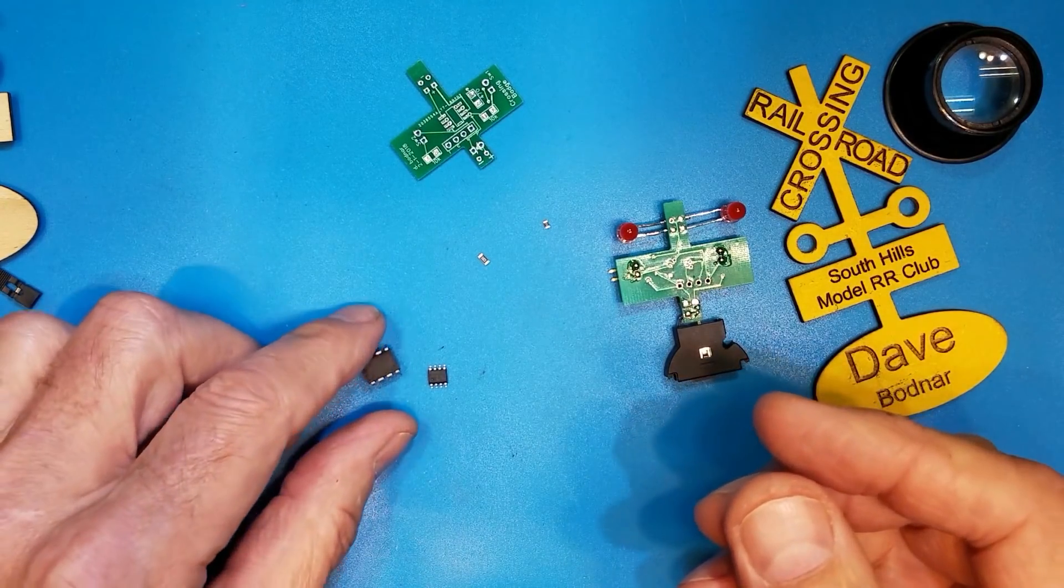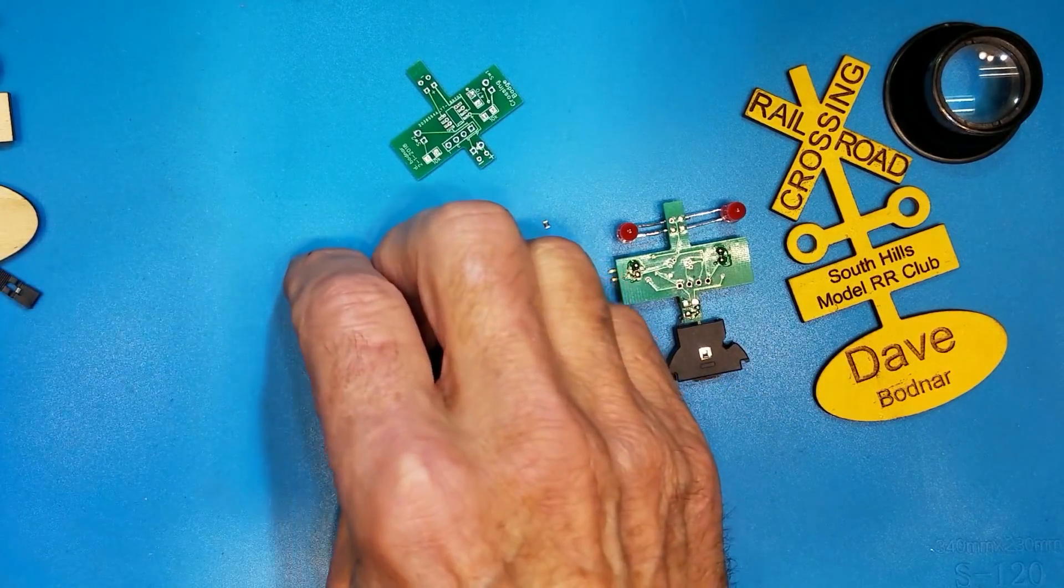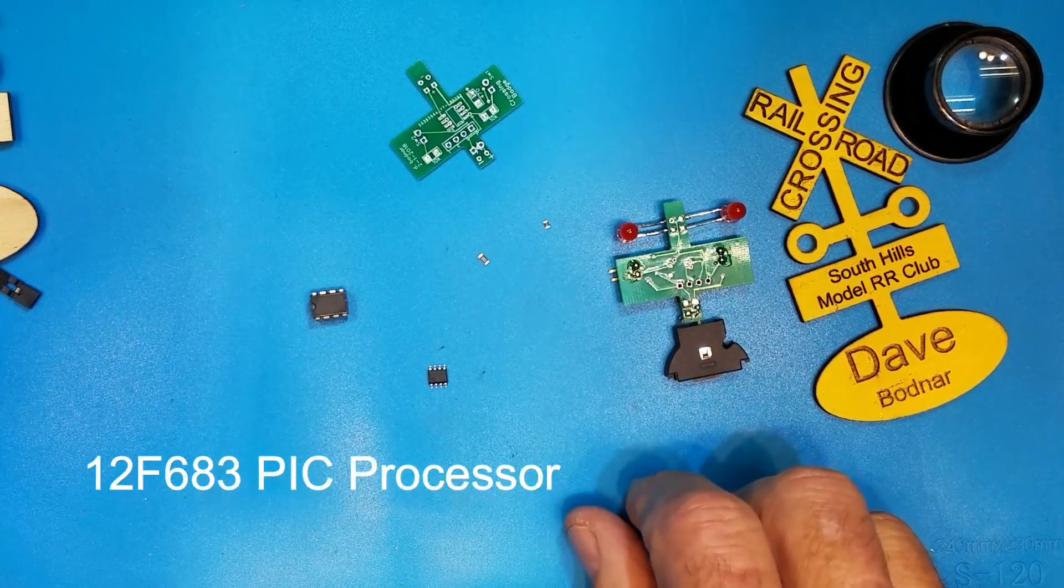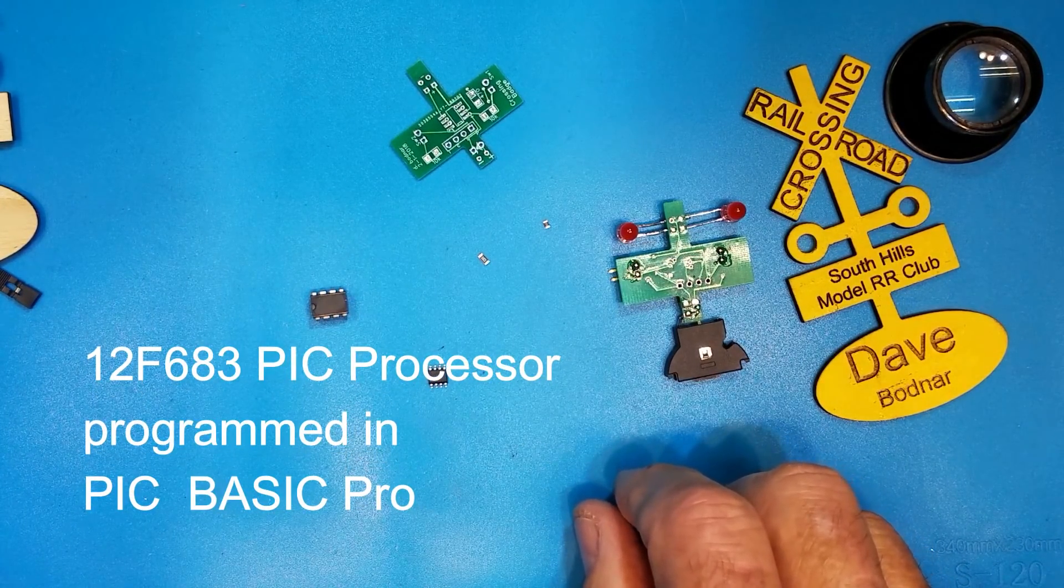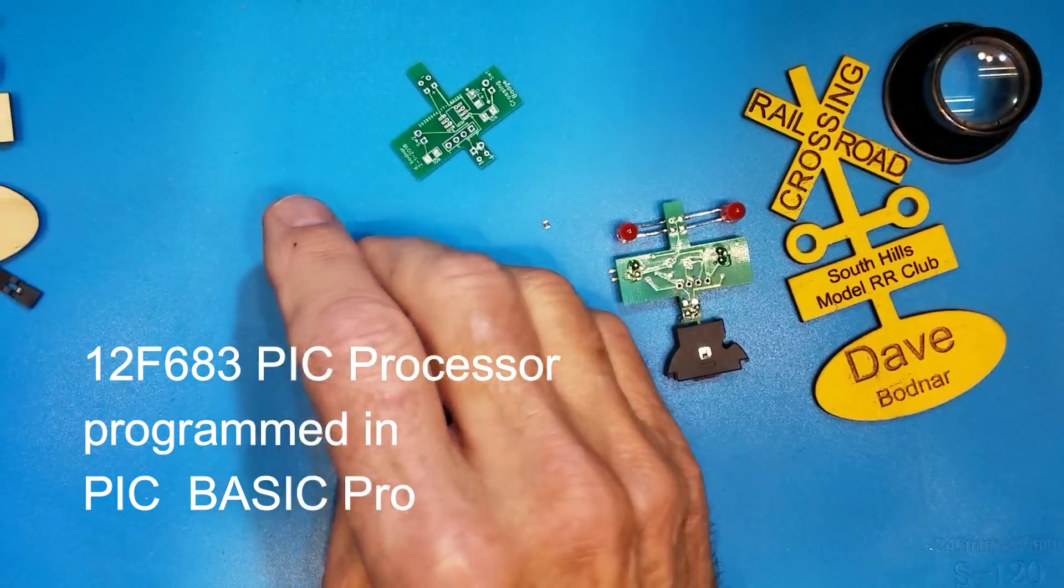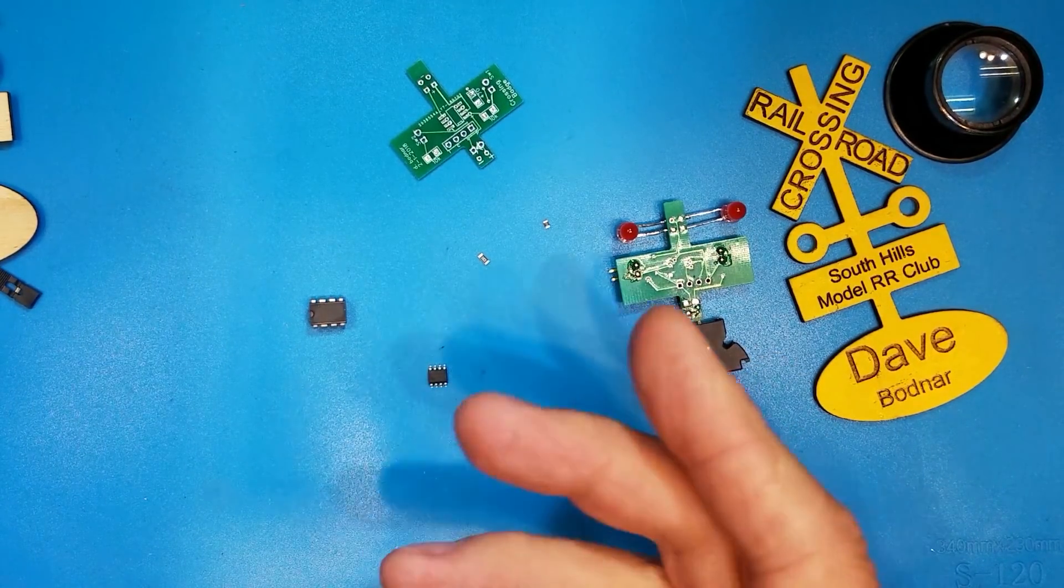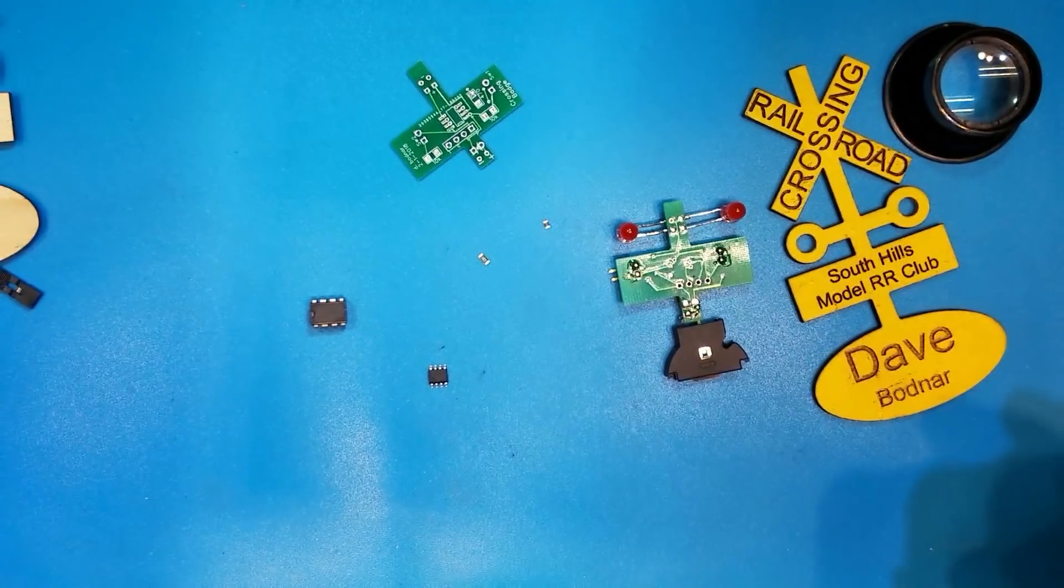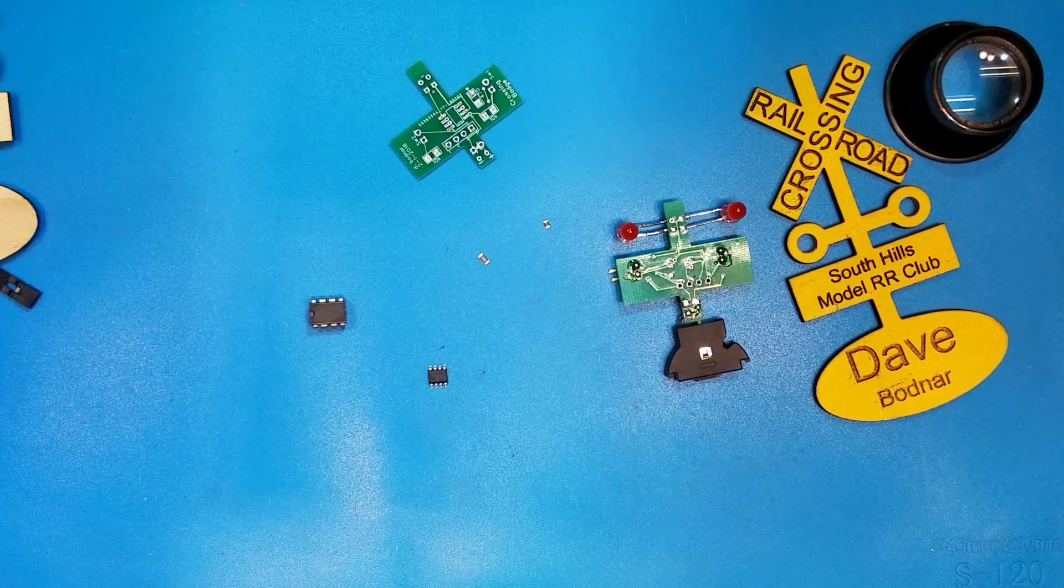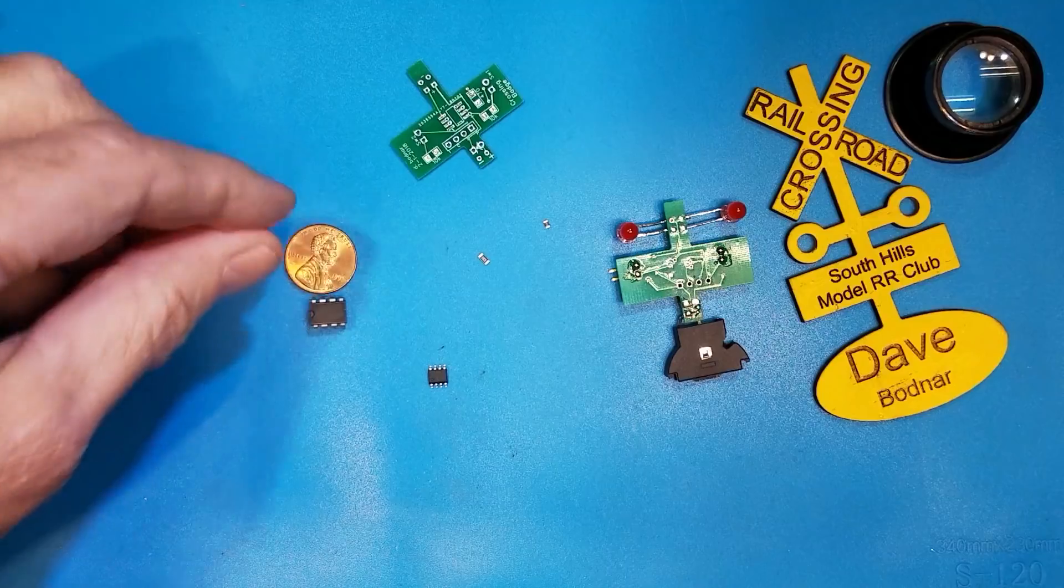First question I guess is why surface mount? Well this is a microcontroller, that's a 12F683 PIC processor and that's the standard dual inline pin 8 pin package. Not particularly large, here's a penny that I can put next to it just to give you a comparison.